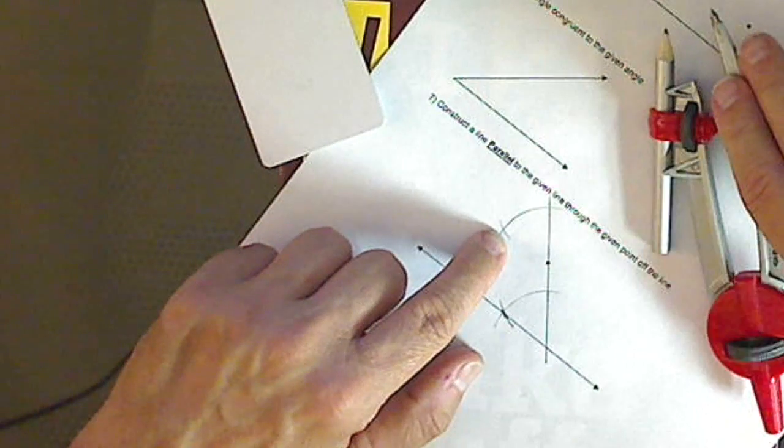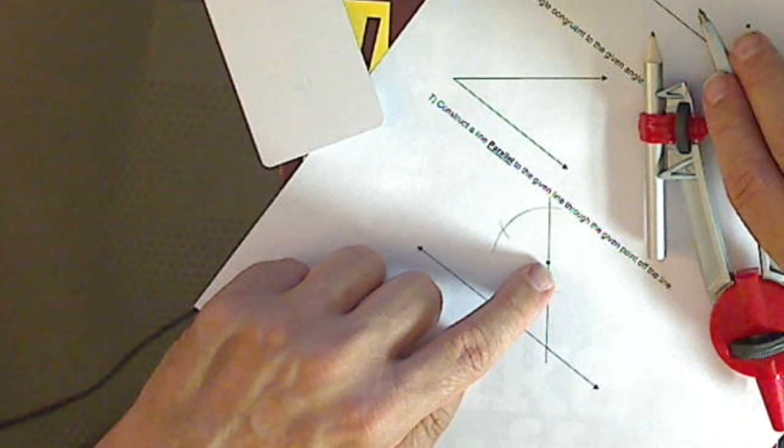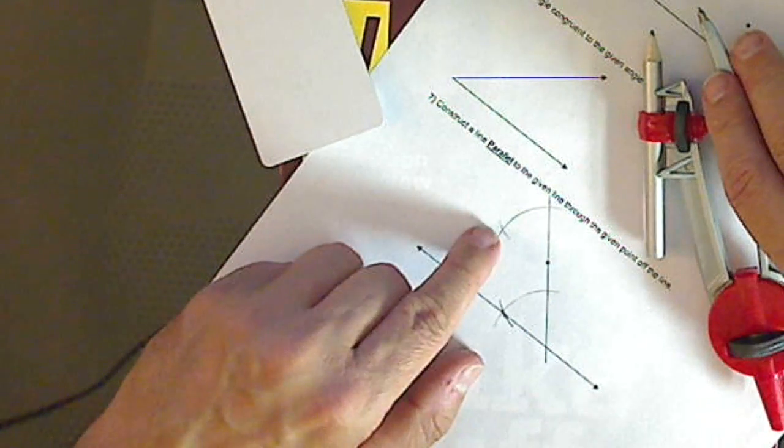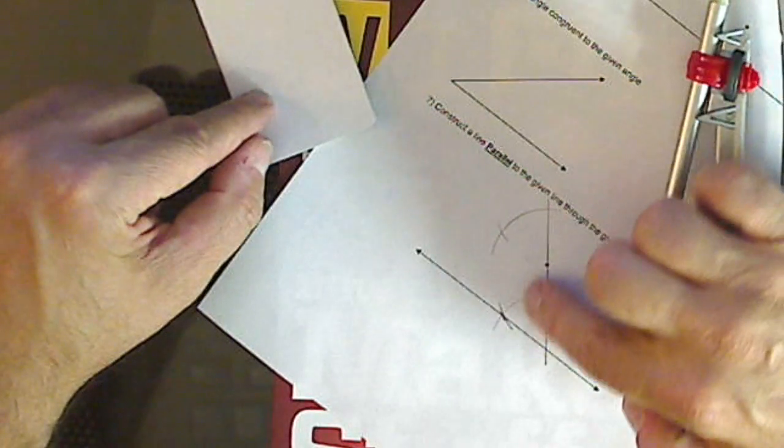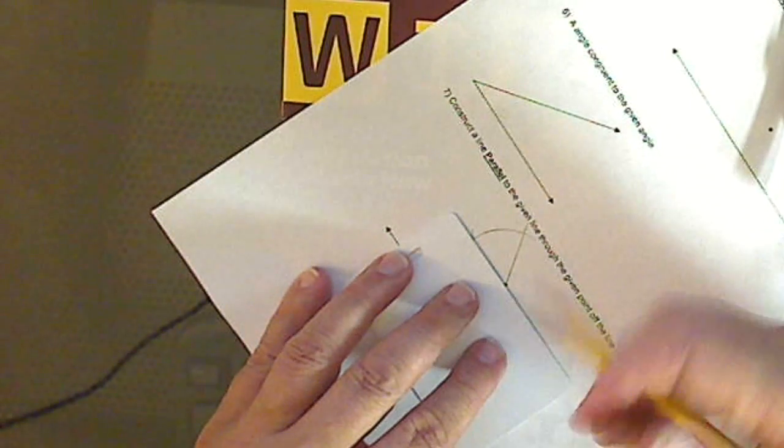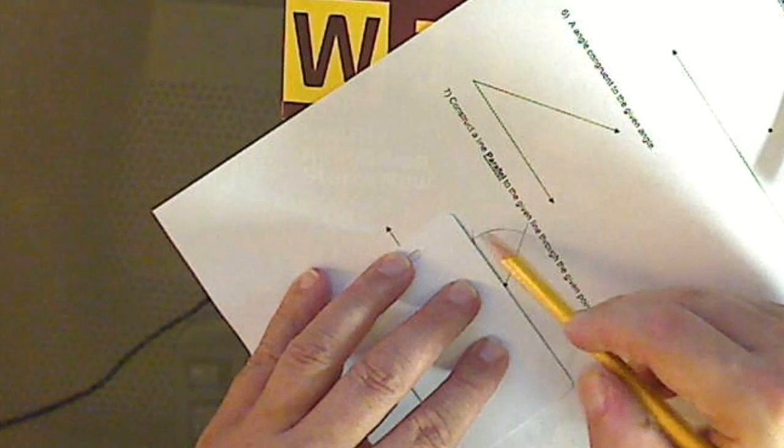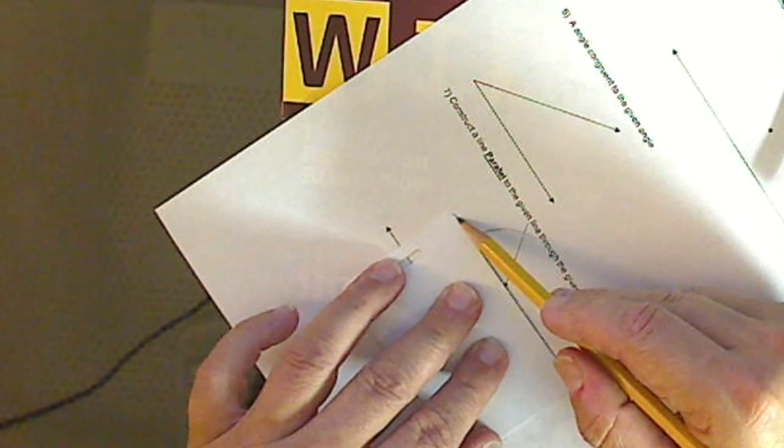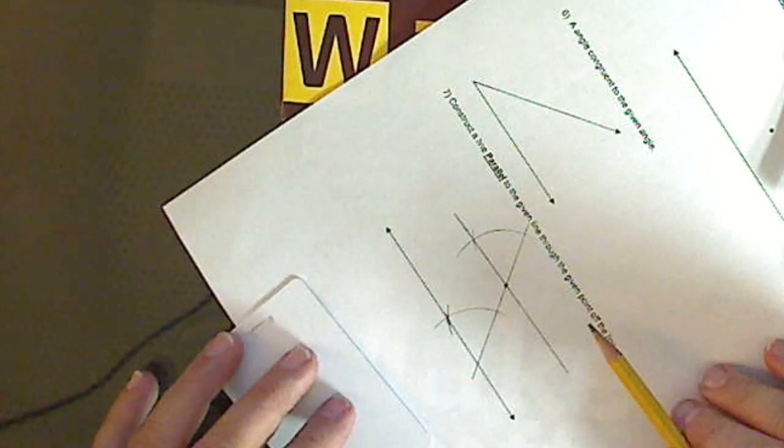Now that intersection is a point, and that's the given point, and these two points when connected should make a line that's parallel because I will have this angle equaling this angle. When corresponding angles are congruent, the lines will be parallel. And hopefully they're fairly parallel. Eh, not too bad.